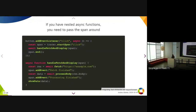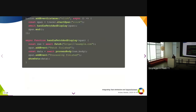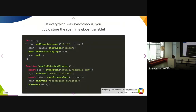If we want to refactor this to have nested functions and extract some code, you have to pass the span around — that's the only way. If you need to call add_event, there's no other way than passing it around. But if everything was synchronous, you could store the span in a global variable — whether it's actually global or local to some module.